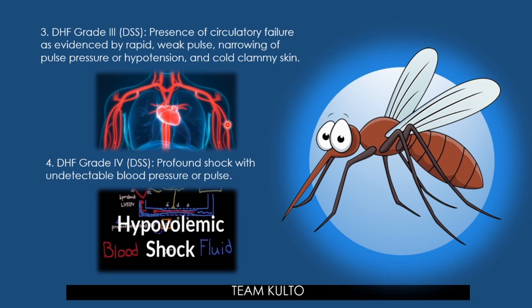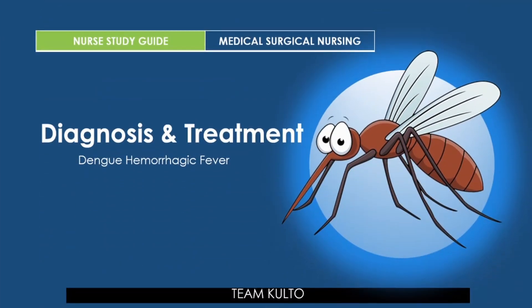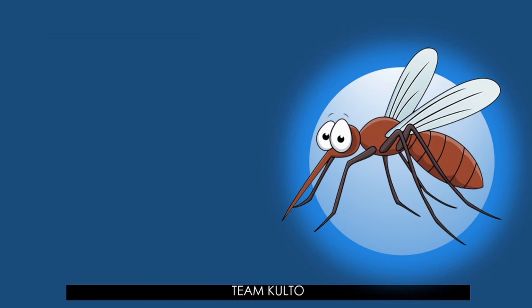Grade 4: profound shock with undetectable blood pressure or pulse — all four prior manifestations plus evidence of circulatory failure including rapid weak pulse, narrow pulse pressure less than 20 mmHg or hypotension for age, cold clammy skin, and restlessness. Now let's discuss diagnosis and treatment.